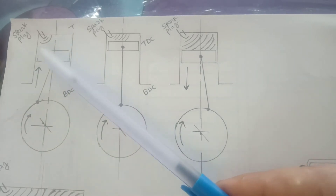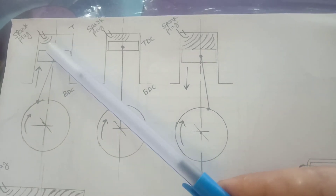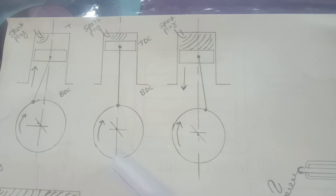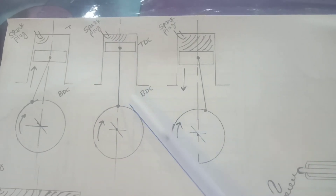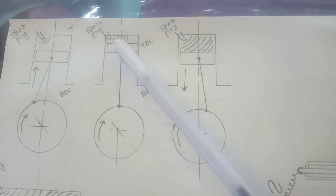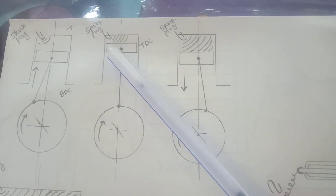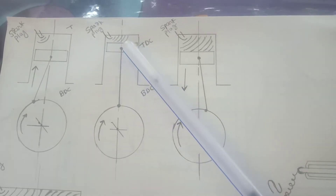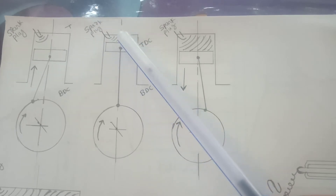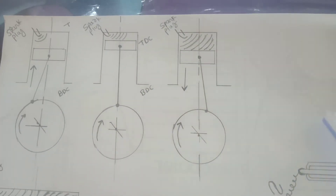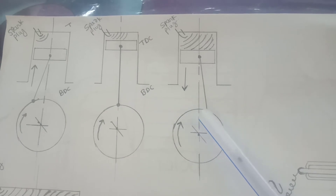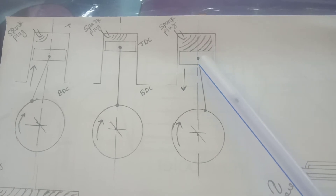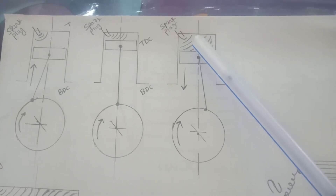When the piston is just before TDC, we introduce the spark, and due to the spark, the charge waves propagate. In the second diagram, when the piston is just at TDC, the wavefront in the clearance volume has propagated almost completely through the combustion chamber. In the third diagram, we see when the piston crosses the top dead center.